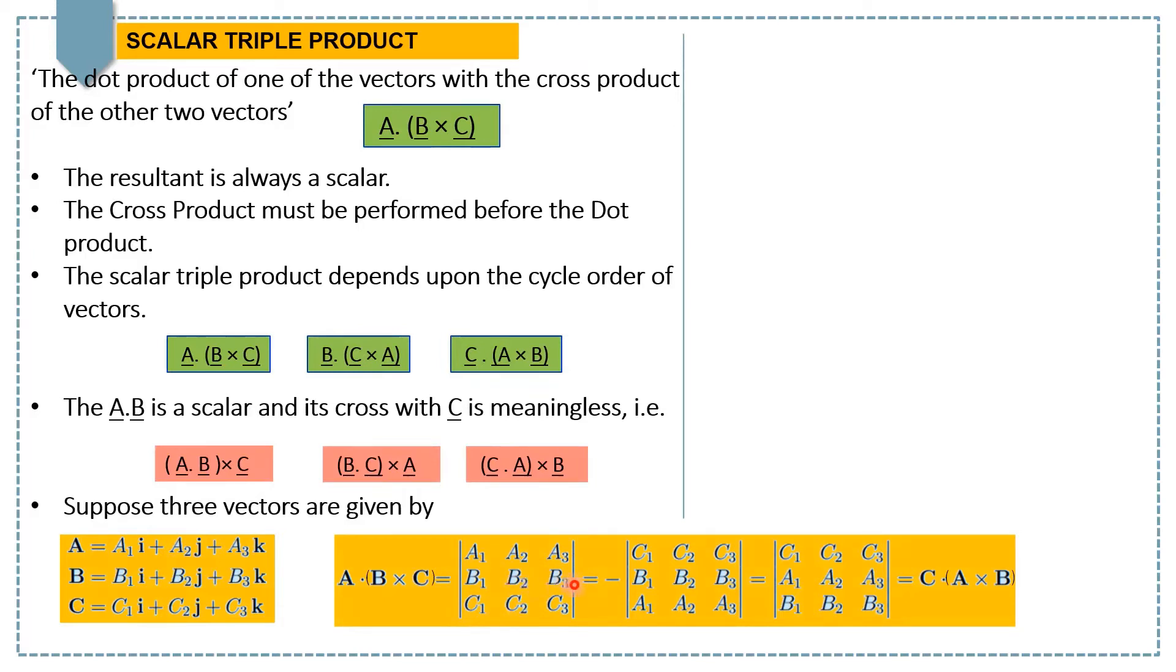The rules of interchanging rows and columns of a determinant provide an immediate verification of the permutation, where you can see the symmetry of A, B, and C in the determinant suggests the other relation, ultimately getting C dot A cross B.